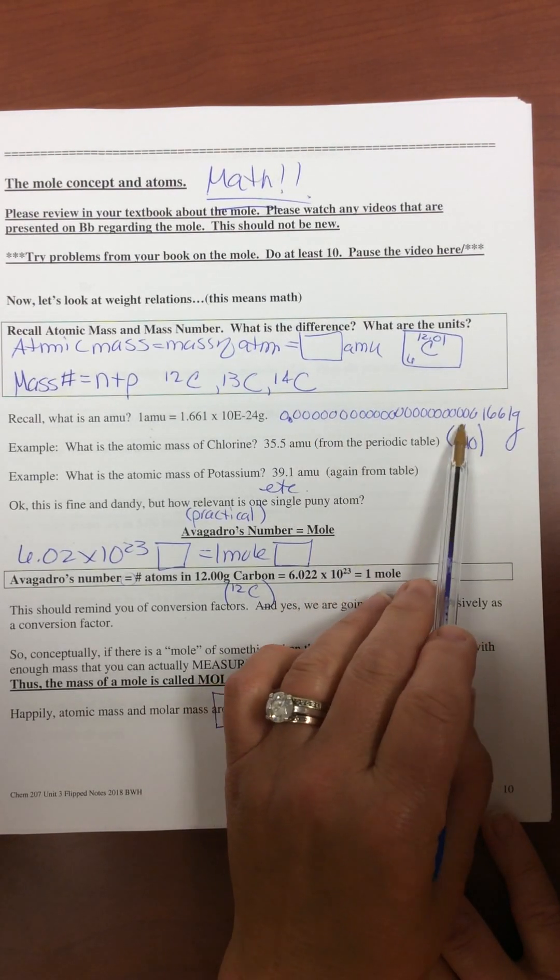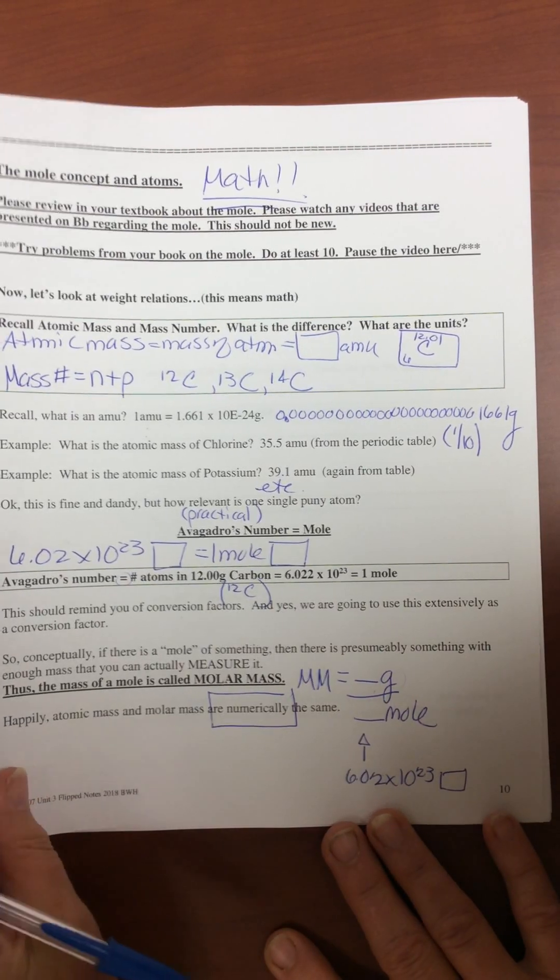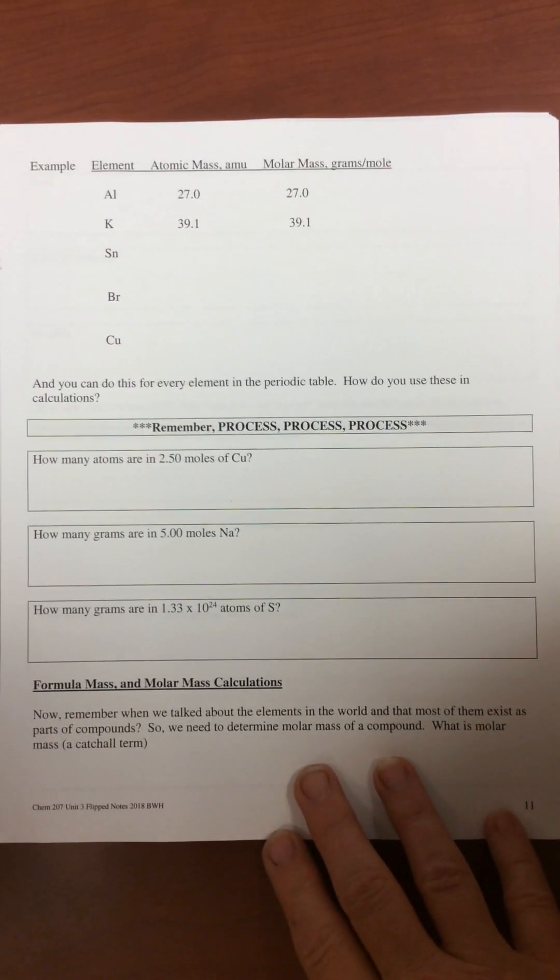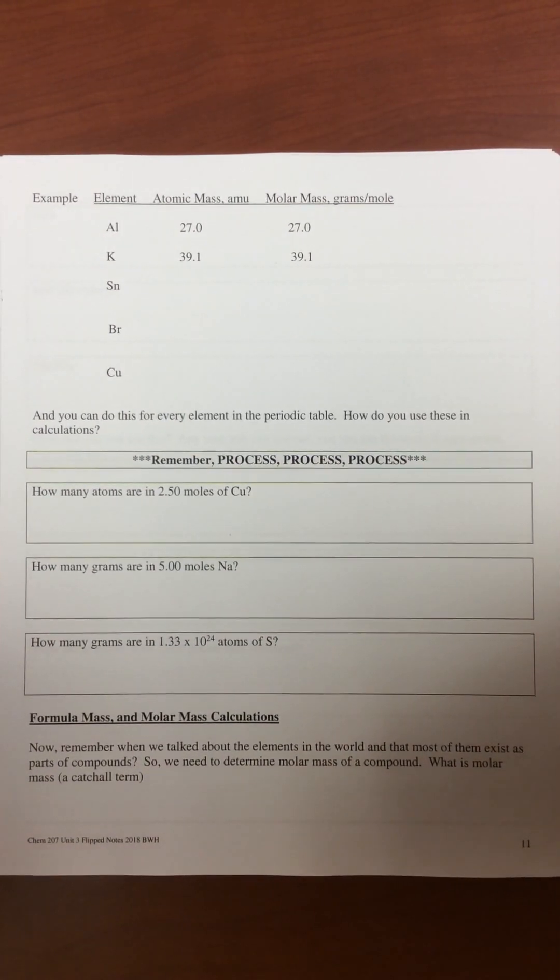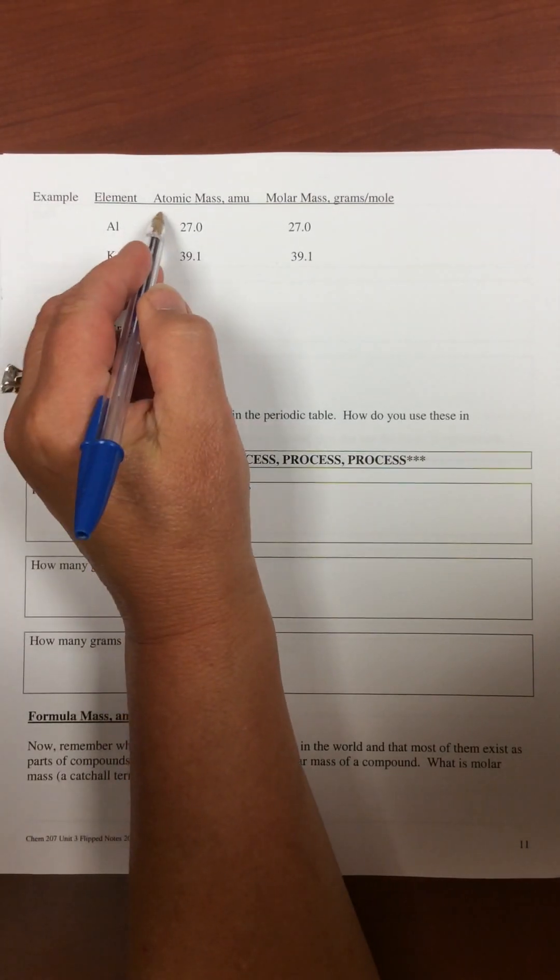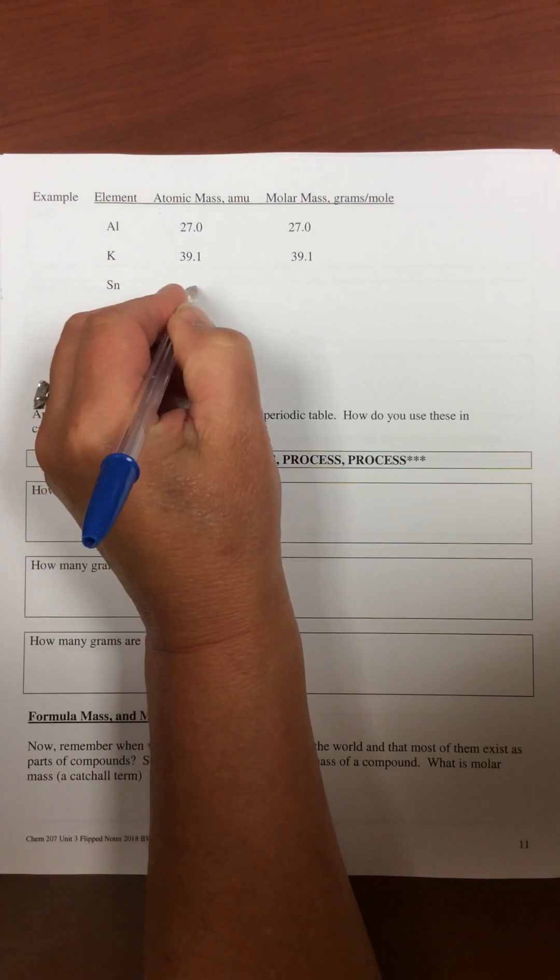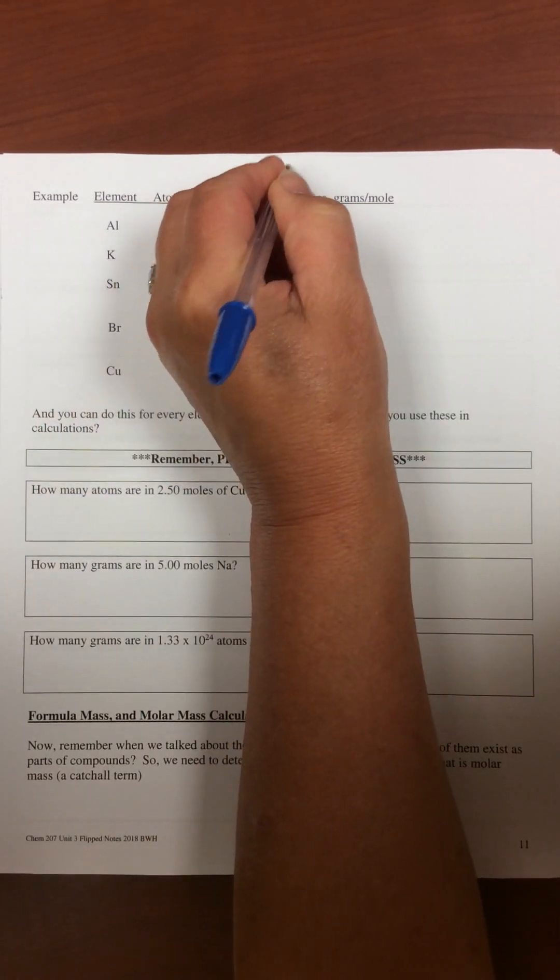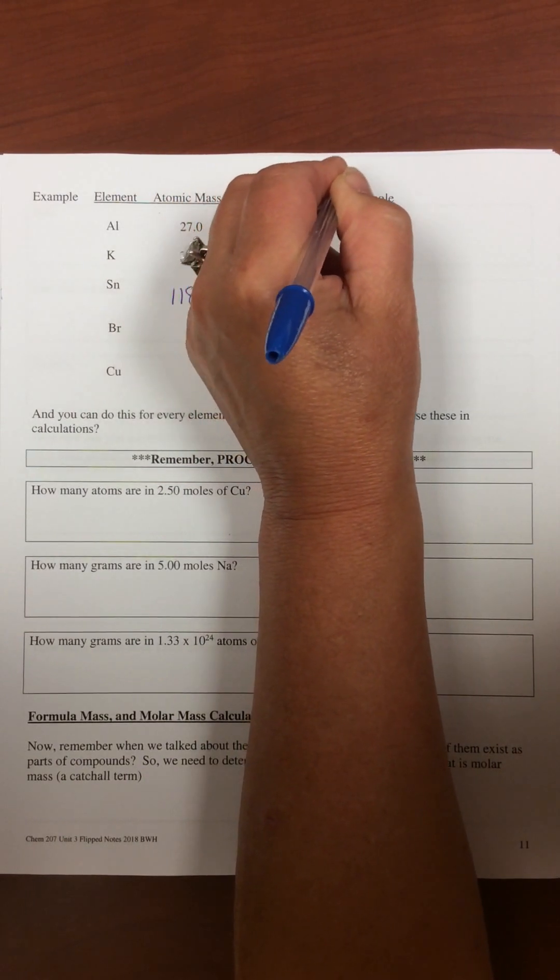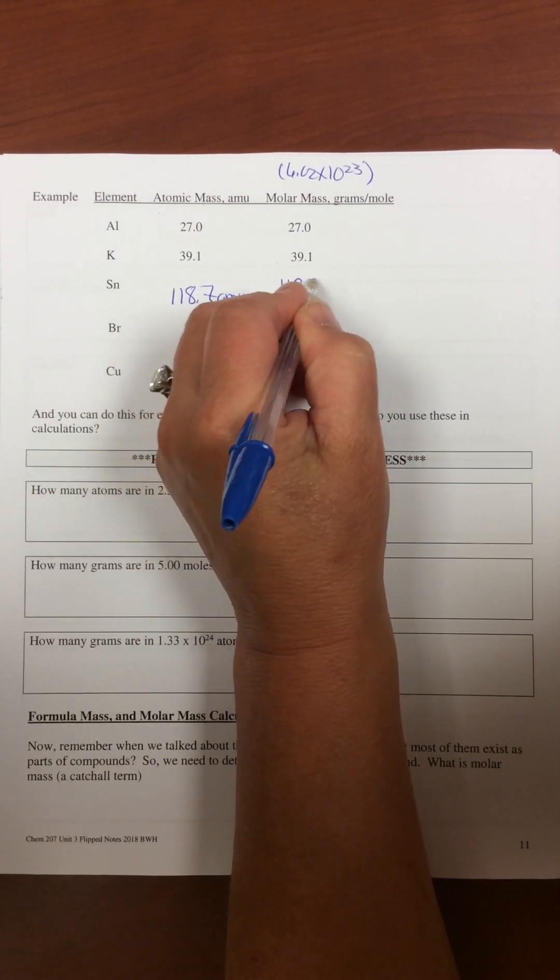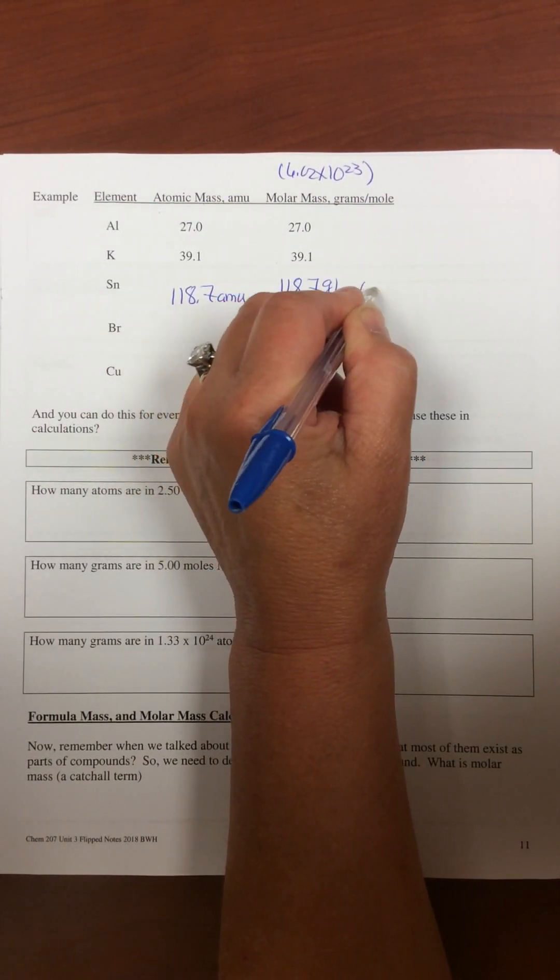You cannot weigh this, but you can weigh a gram. So again, you go back to your periodic table and you can figure this out. So get your periodic table and you would see that the atomic mass is 118.7 amu. You multiply up by 6.02 times 10 to the 23rd, and its molar mass is 118.7 grams per mole.